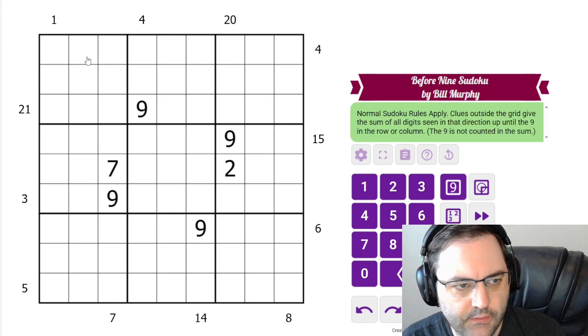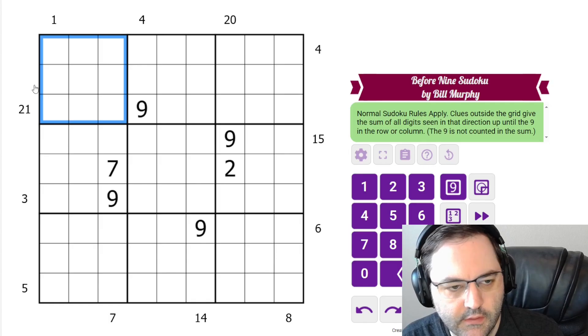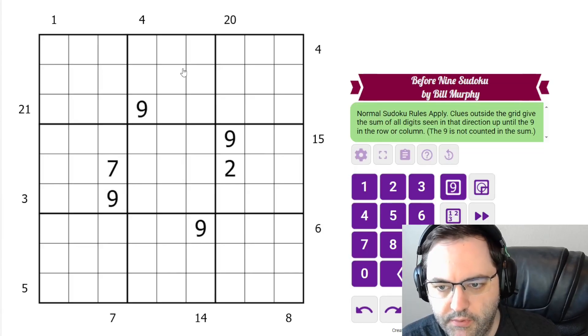So in this one we have normal Sudoku rules, 1 to 9 in each row, column, and 3 by 3 box. Additionally we have some clues outside the grid, and the clues give the sum of all the digits up to the 9, not including the 9.